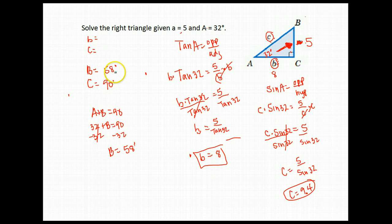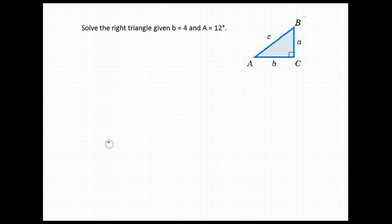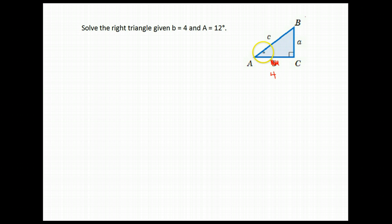So I found all of my missing parts: side B was about 8, side C was about 9.4, angle B was 58 degrees, and angle C was 90 degrees. We are going to do one more of these. You may want to try it on your own first to see what you get.